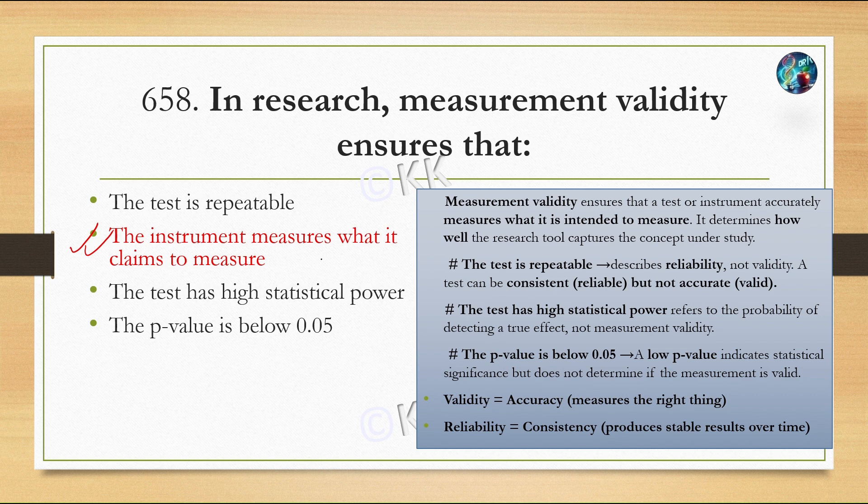Validity ensures that the test or instrument accurately measures what it is intended to measure. It determines how well the research tool captures the concept under study. When measurement tools used for research are accurate, we call this measurement validity. The test being repeatable refers to reliability. Statistical power is the probability of detecting a true effect. P-value below 0.05 indicates statistical significance. Validity refers to accuracy, while reliability refers to consistency.